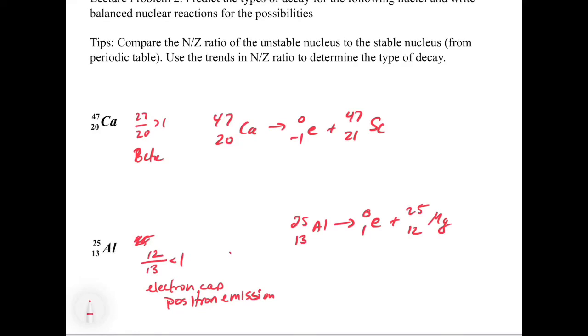So that would be a positron emission. If we did electron capture, and we had 25 over 13 aluminum, we would add an electron, 0 over -1 e, and then our product would be the same.